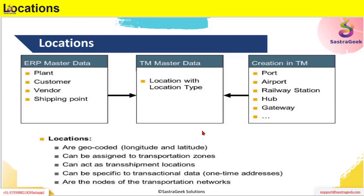The importance of locations is that they are geocoded — you can maintain longitude and latitude details, enabling integration with GIS and geographical positioning systems. We'll see in the system how they are geocoded and what details are maintained. These locations can also be assigned to a transportation zone, so locations are definitely a part of a transportation zone.